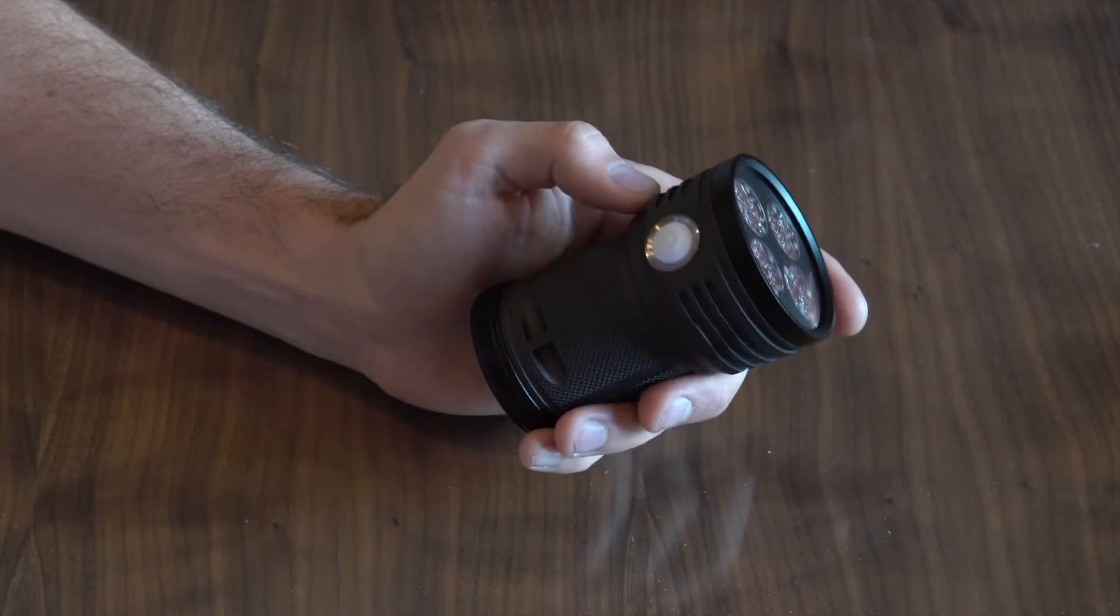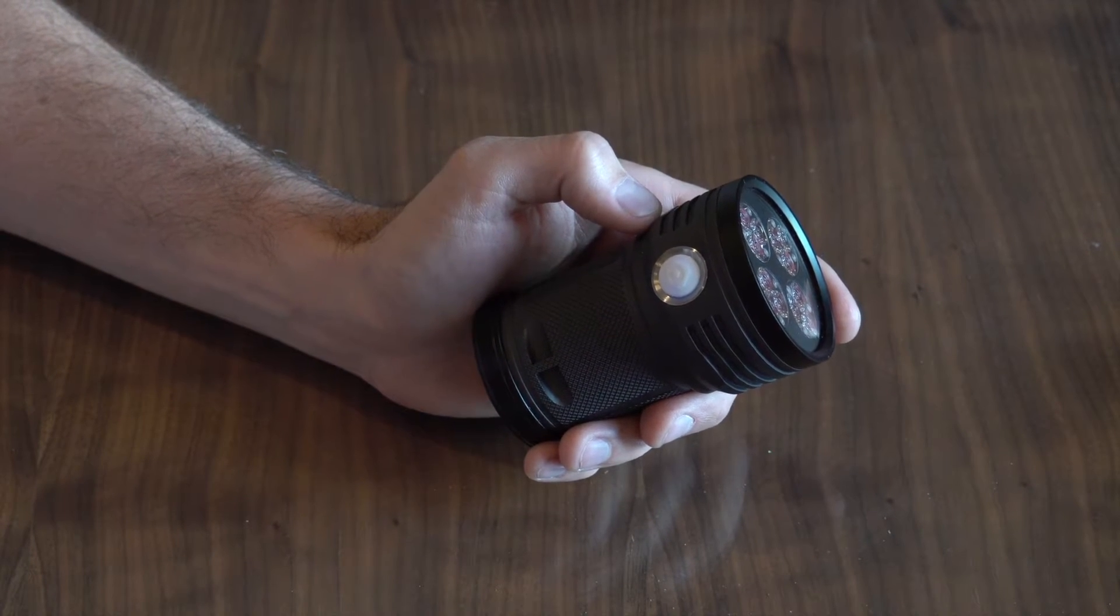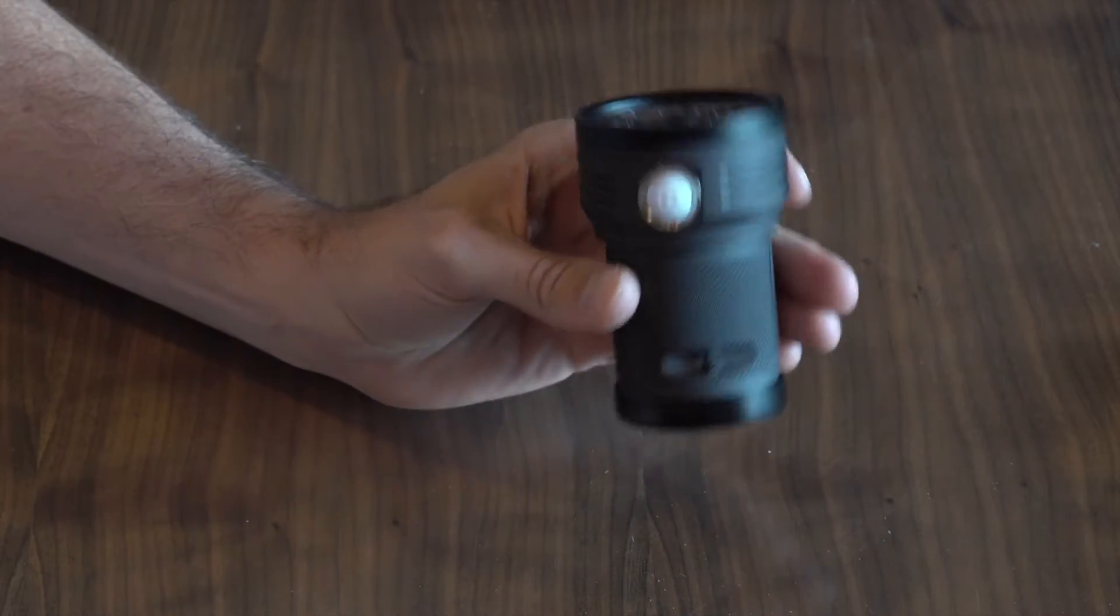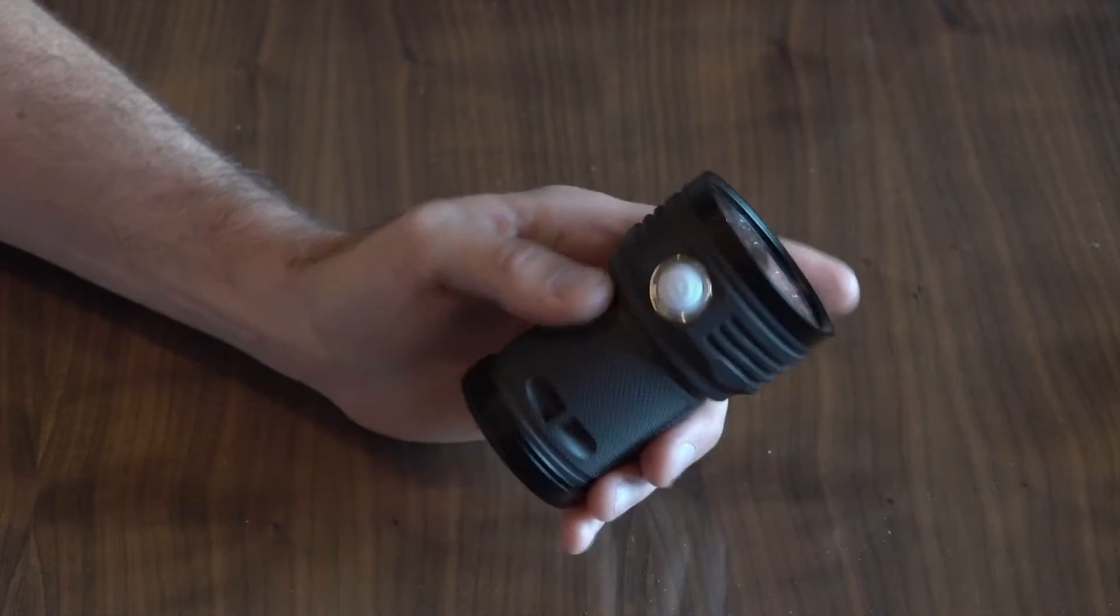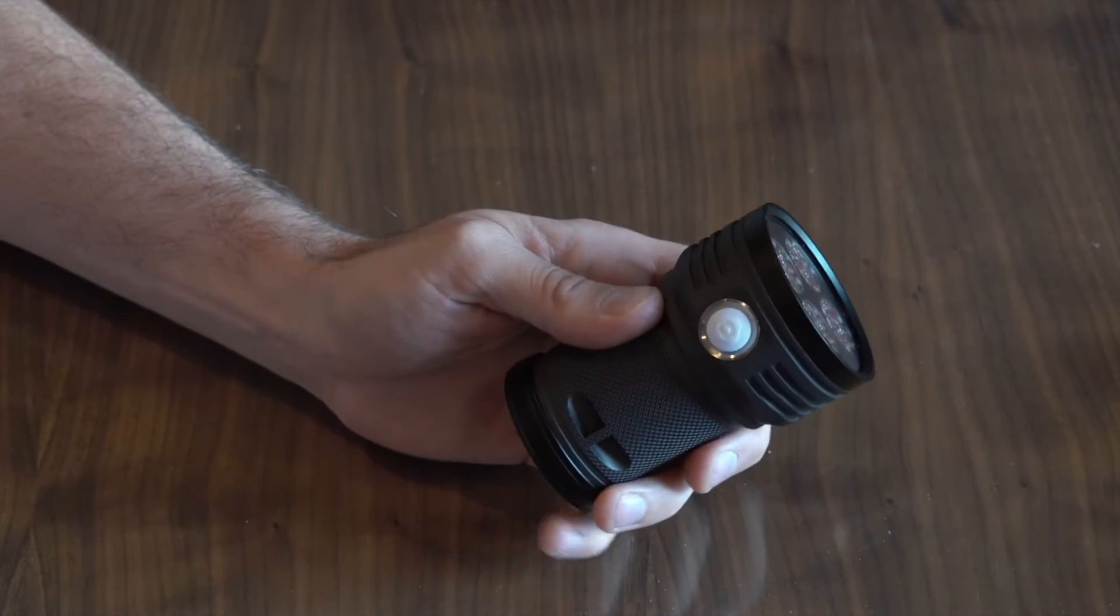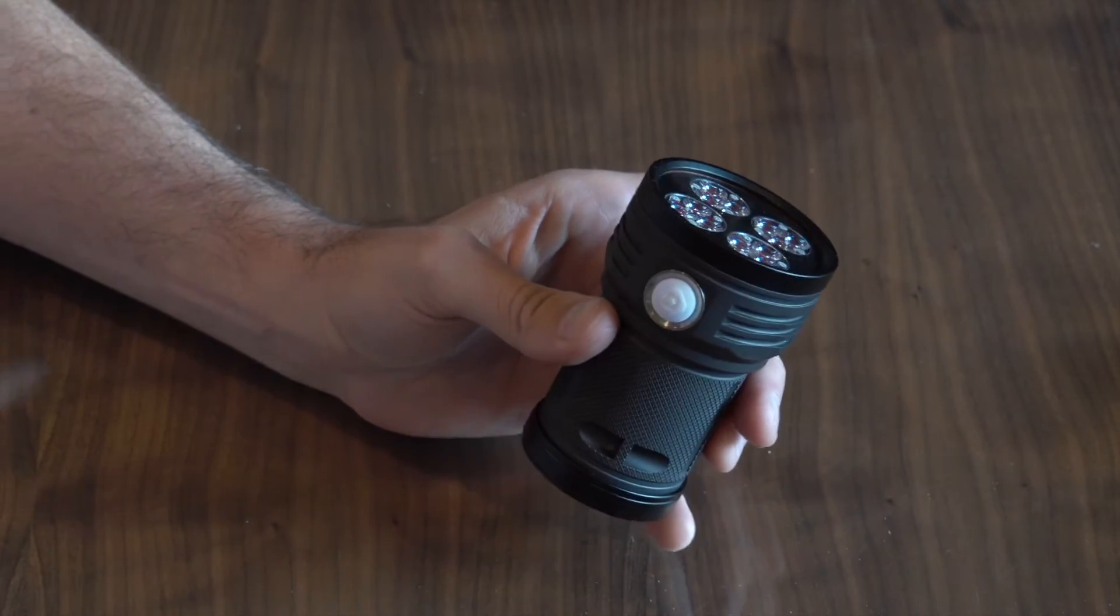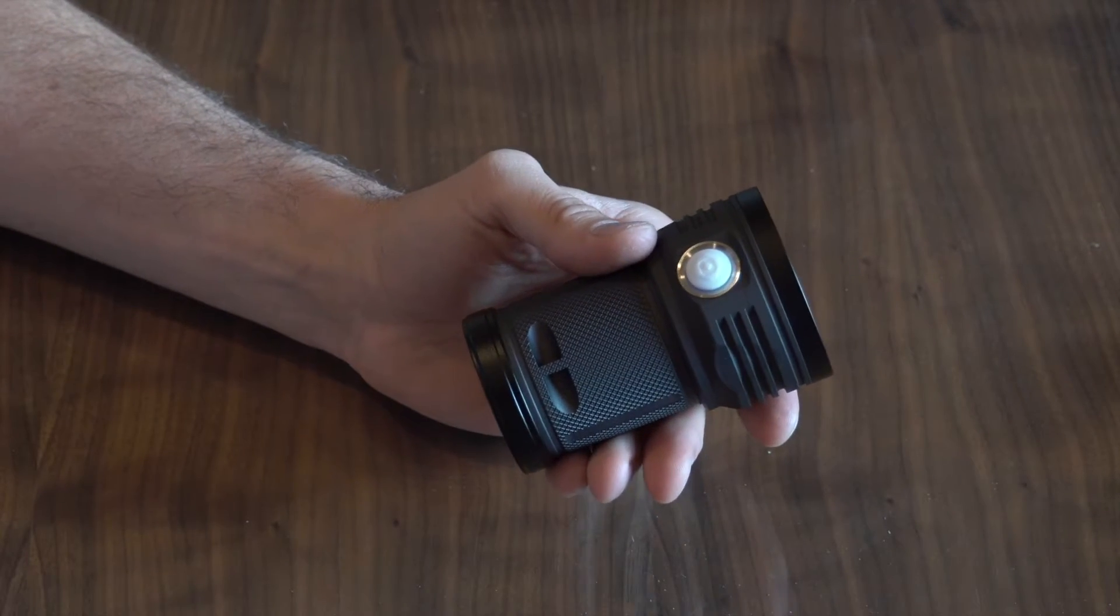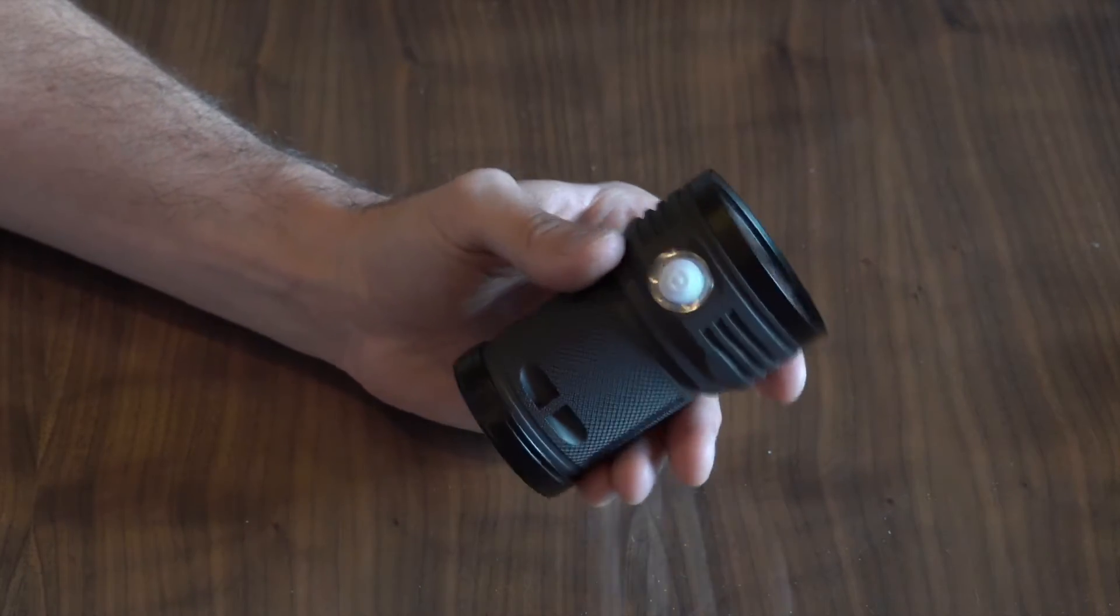Now that you know how the clicks and hold function works, here are a few common uses. The first one I'd like to address is the lockout function. Now the Meteor has two ways to lock it out so it doesn't accidentally turn on in your pocket or in your holster or bag or whatever.